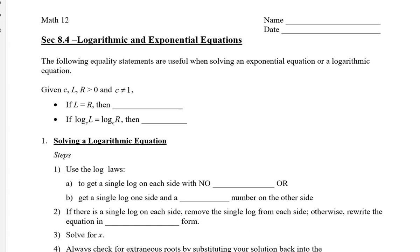So given these variables c, l, and r, and they are all greater than zero, and c doesn't equal one, then if l is equal to r, then if I log the left side, that should equal to the log of the right side. I can use a base of 10 or any base — I'll put a little c to show that's any base. Now in reverse, if we have a log equal to another log and the bases are the same — you can see that these bases are both c — then we can say that l is equal to r. So the value on the left is equal to the value on the right.